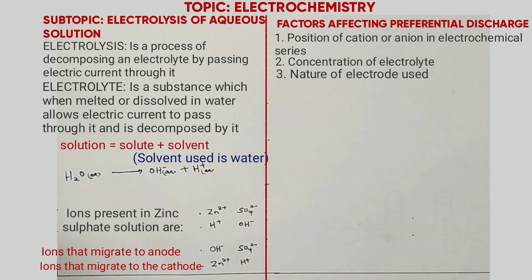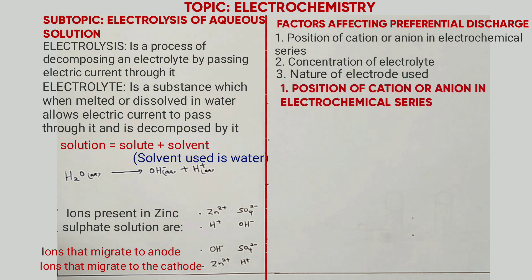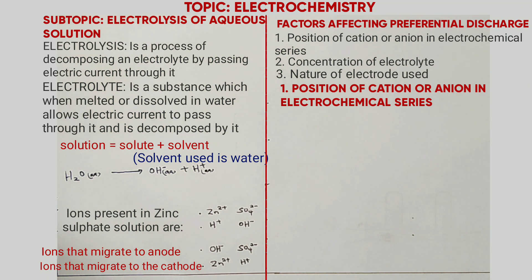For factor one — position in the electrochemical series — to apply in the electrolysis of aqueous solutions, the solution must be dilute and an inert electrode must be used, for example graphite, titanium, or platinum. The most preferred electrode is graphite because it is inert and is cheap.